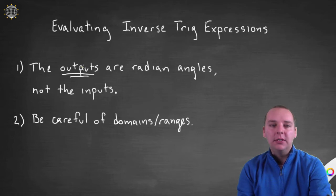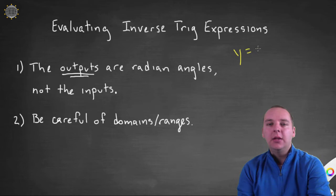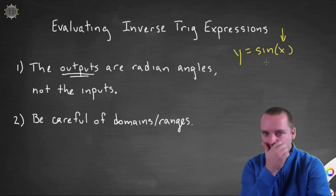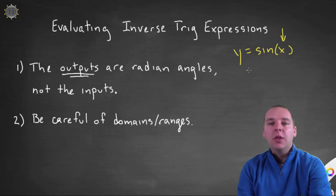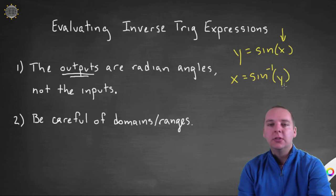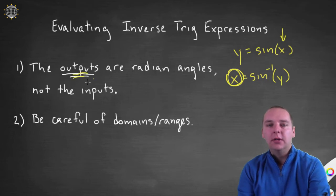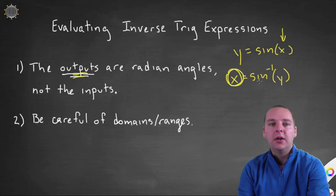There's really two main things we have to remember when we're trying to evaluate an inverse trig expression. First of all, the outputs are going to be radian angles, not the inputs. And that's kind of strange because normally when you think about a trig function, like if you have y equals sine x, you plug in an angle into the trig function and then you get out a real value. But if this was an inverse relationship, if this was like x equals sine inverse of y, look at where the angle is. The angle is actually here. The angle is the output of the sine inverse expression, not what you plug in. So that's the first thing to notice.